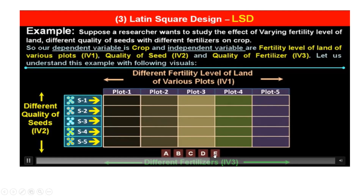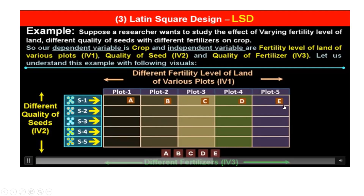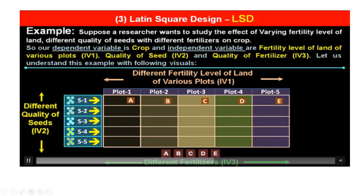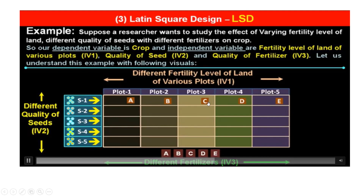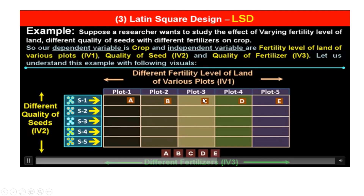In plot 1, fertilizer A is used. In plot 2, fertilizer B is used. In plot 3, C, plot 4 D, and plot 5 E. Next time, we will use fertilizers B, C, D, E, and A across plots 1 through 5. Each time a different type of fertilizer is used so that no fertilizer is repeated in the same plot.